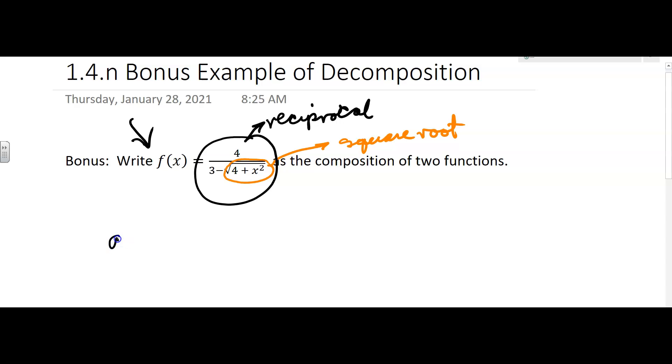I'm going to say g of x is equal to 4 over 3 minus x. At the little part, the square root part, I'm just going to make that x.